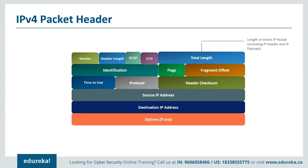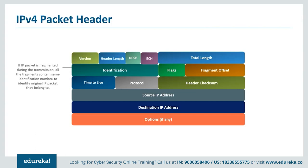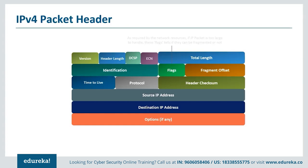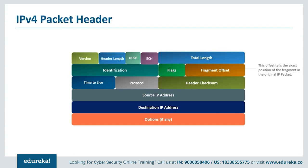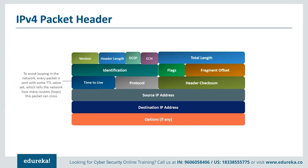Total length is the size of the datagram in bytes — the combined length of header and data. The identification field is a 16-bit number which, together with the source address, uniquely identifies a packet used during reassembly of a fragmented datagram. Flags — a sequence of three bits — control whether routers are allowed to fragment a packet and indicate the parts of a packet to the receiver. The fragmentation offset is the byte count from the start of the original packet. Time to live is the number of hops the packet may be routed over, decremented by routers to prevent accidental routing loops.